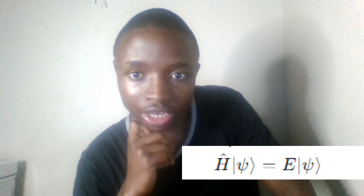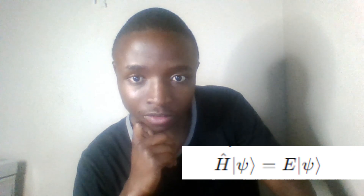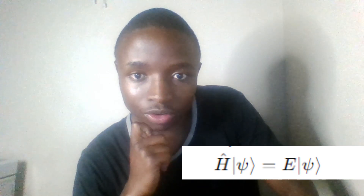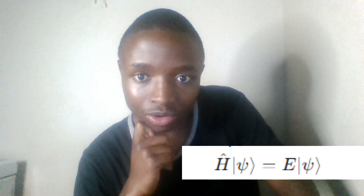Now let's get to another equation. We did the time-dependent Schrödinger equation and the uncertainty principle. The time-independent Schrödinger equation is: E ket psi equals H-hat ket psi. Note there is no psi of T because it is time-independent. E is the energy eigenvalue of the system and psi is the state of the system.